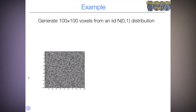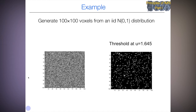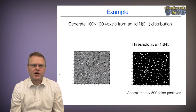Here's an example. Let's say we generate i.i.d. normal (0,1) data over a 100 by 100 grid — so 10,000 pseudo-voxels each following a standard normal distribution. If we threshold at u = 1.645, the 95th percentile of the standard normal, we get about 500 false positives — 0.05 times 10,000. This produces a salt-and-pepper pattern where white indicates values above the threshold.